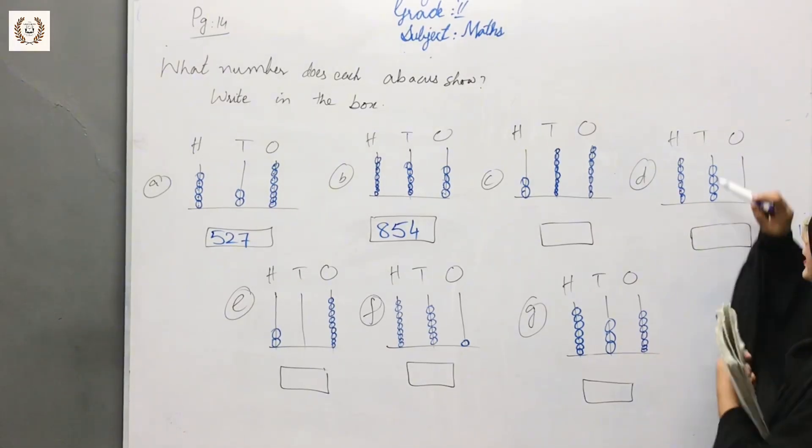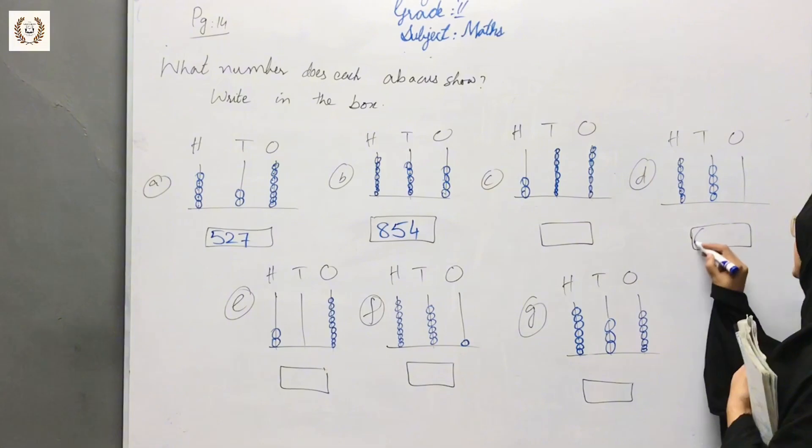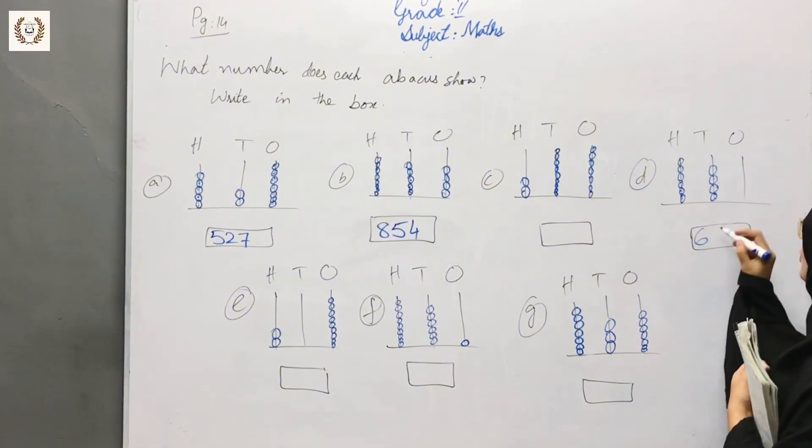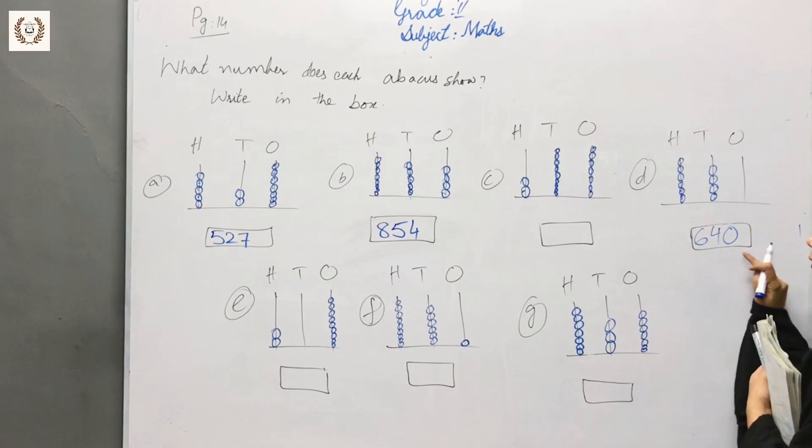Now let's see: hundreds are 1, 2, 3, 4, 5, 6. That's 600. Tens: 1, 2, 3, 4. Four tens. Once you have zero, this is 640.